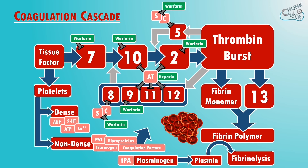So there you have it, that's the coagulation cascade. If you break it down into steps it can be quite easy to understand what's going on. It's probably a little bit more complicated than this if you look into it in more detail, but this is a good overview. The full resource is available at our website, and if you found this video useful please like, share and subscribe. See you next time and thanks for watching.